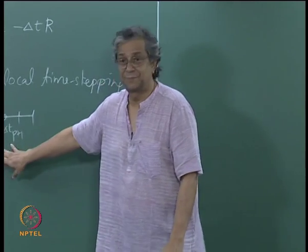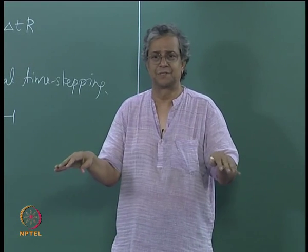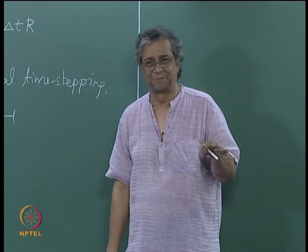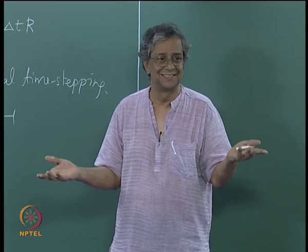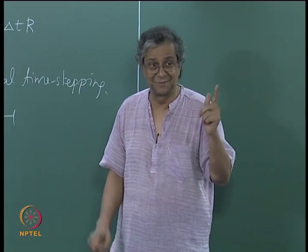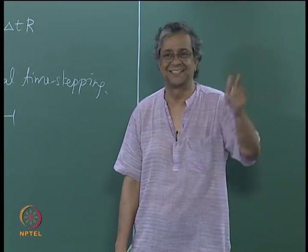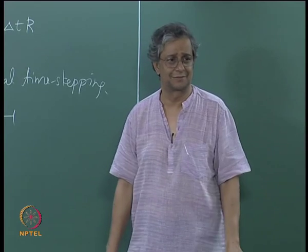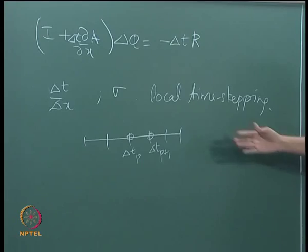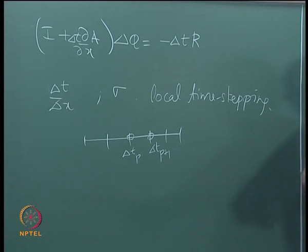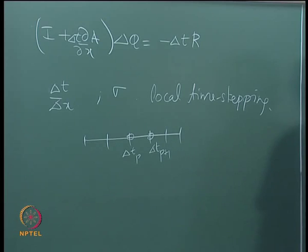Anywhere I can take large time steps, let me take large time steps. Where I am constrained to take small time steps, I will take small time steps at those points. By doing local time stepping, point to point in the domain, my solution is no longer at a uniform time — I say 'first time step' rather than 'at delta t'. I do not care about the transient, and my experience has been that you do get to the steady state solution faster.